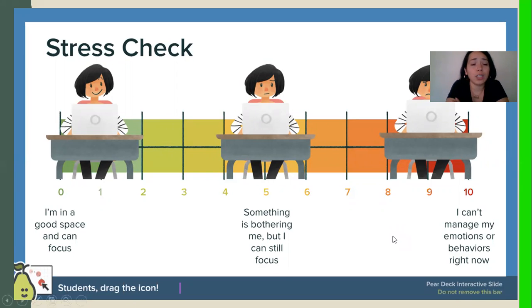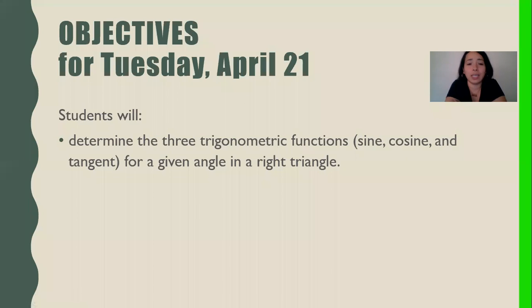Good. I see we have one student who's in the good space and can focus. We have a one. I'm going to also respond in the chat box. Okay, zero. So that's what I thought A represented. I'm glad everyone seems to be at least at an okay space to learn today.